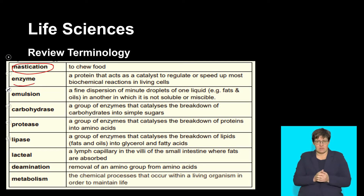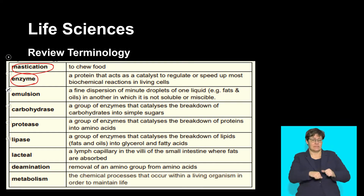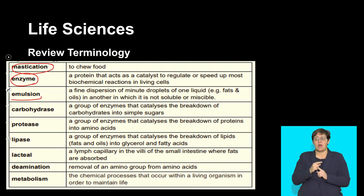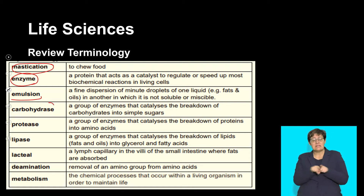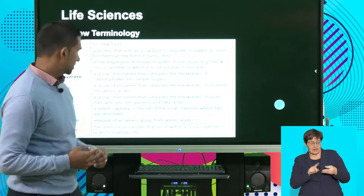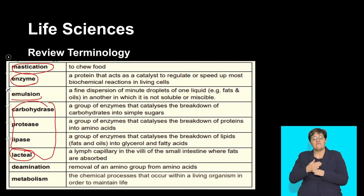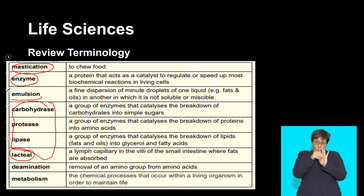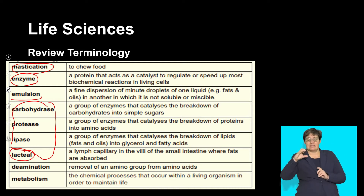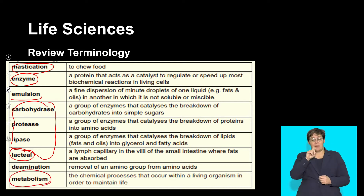We've mentioned several different enzymes that are important in the process of digestion along the digestive system. Emulsification is what happens when fat droplets mix with bile and break down into smaller particles. We refer to different enzymes that break down carbohydrates, proteins, and lipids. We also looked at the function of the central lacteal — the structure inside the villus that absorbs nutrients such as fats and amino acids. The concept of metabolism is important as the chemical process that takes place in an individual.